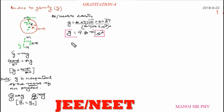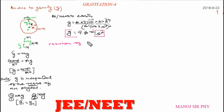This value of 9.8 m/s² applies near or above the surface of Earth up to a certain height. But when you go above a certain height or below the Earth to a certain depth, the value of acceleration due to gravity will change. Let's discuss the variation of g with height.